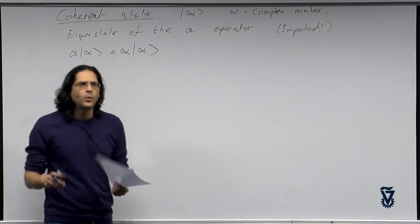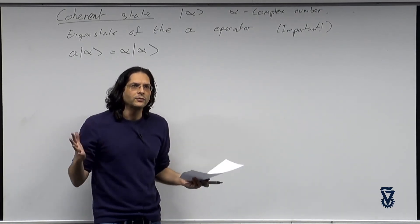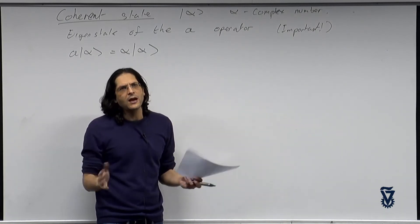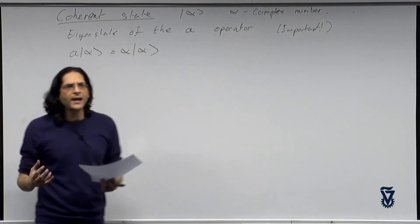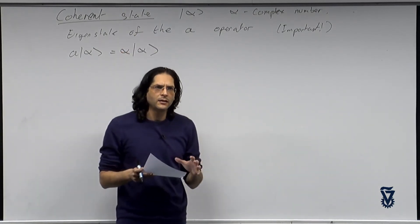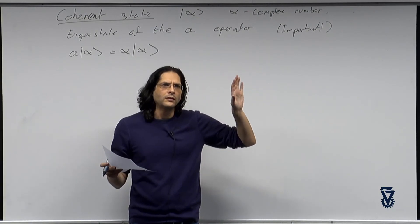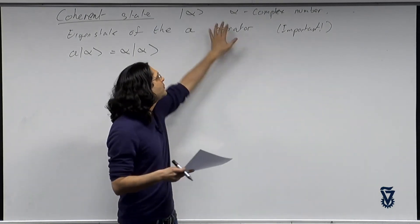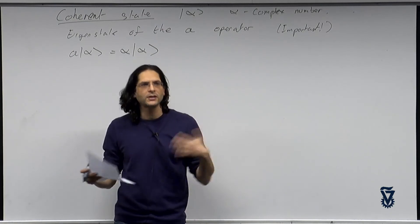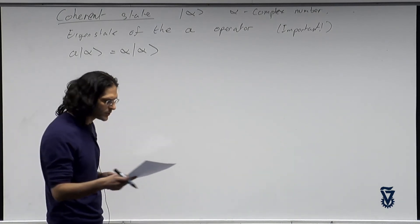Up until this point, when we talked about fields — magnetic field, electric field — they were all classical fields: some amplitude oscillating at some frequency. But the description of light is actually quantum. The coherent state is as close as you can get, and for very large α it is practically a classical field. When we take α to be very large, we're taking the limit of a classical field. In the next chapter we'll see how that interacts with atoms, with two-level systems, with qubits.